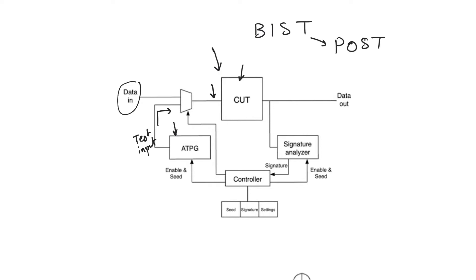When a test mode select signal is applied to the multiplexer, we pick the test input coming from the ATPG, which is then applied to the circuit under test, producing outputs. These outputs would normally be compared to a gold standard to determine if the chip is functioning properly. In an ATPG setup, this is usually applied to something called a signature analyzer. A signature analyzer takes the outputs and automatically performs the task of checking if the outputs match the correct outputs. When it detects a mismatch, it generates something called a signature — a compressed binary word representing the detected problem.